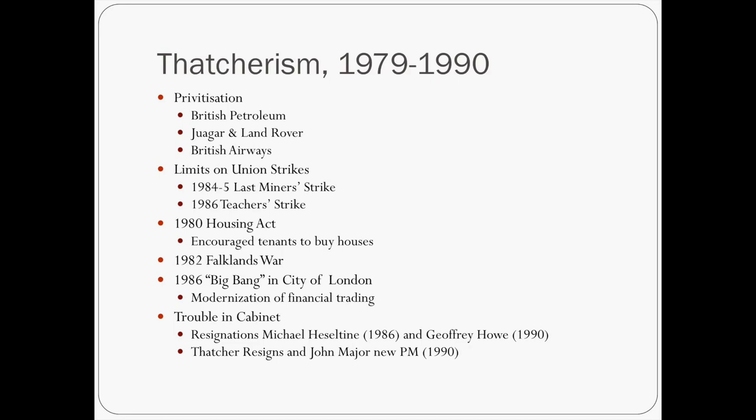In 1986, the so-called Big Bang in London modernized financial trading by computerizing the stock market. This caused a lot of problems and also caused trouble in the cabinet because of improprieties and bribes, resulting in the resignation of two members of parliament. As a result of the economic changes and cabinet problems, Margaret Thatcher ended up resigning in 1990, and John Major became the new prime minister.